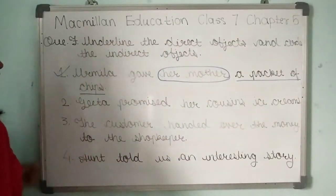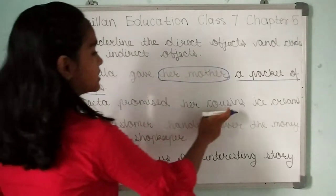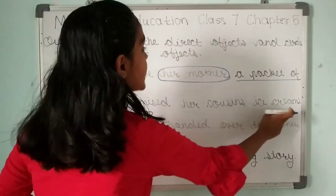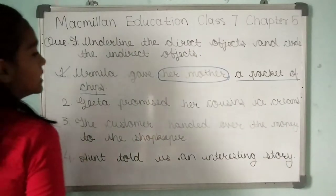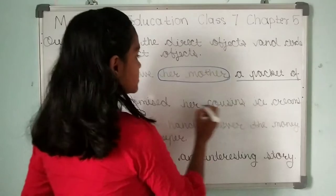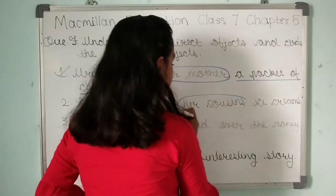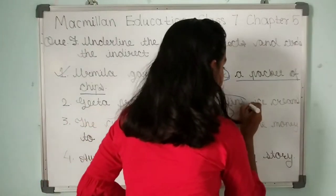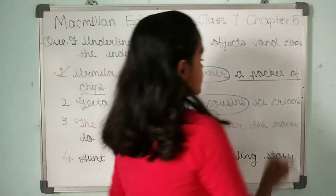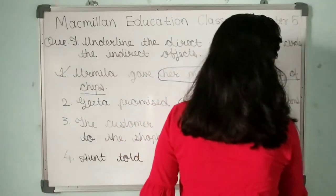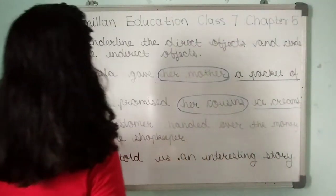Question two: 'Geeta promised her cousins ice creams.' Here, 'her cousins' is the indirect object and 'ice creams' is the direct object.